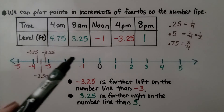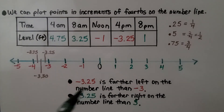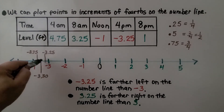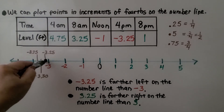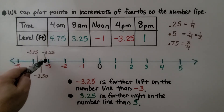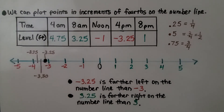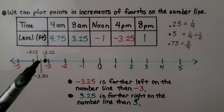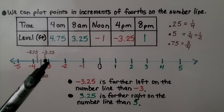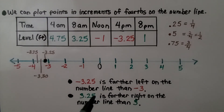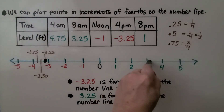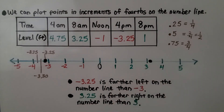For negative 3 and 1 fourth, that would be right here — we would plot that farther to the left than 3, at 3 and 1 fourth. Negative 3 and 25 hundredths is farther left on the number line than negative 3. And 3 and 25 hundredths — 3 and 1 fourth — is farther right on the number line than 3.